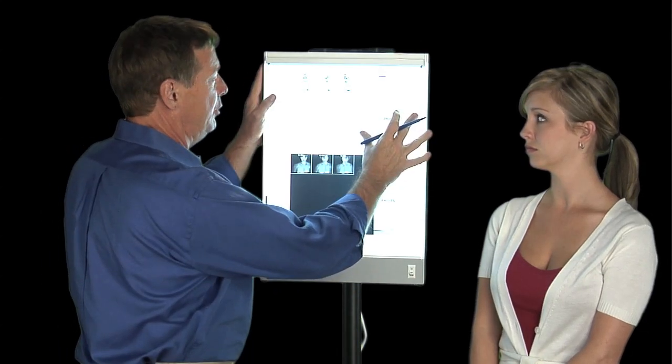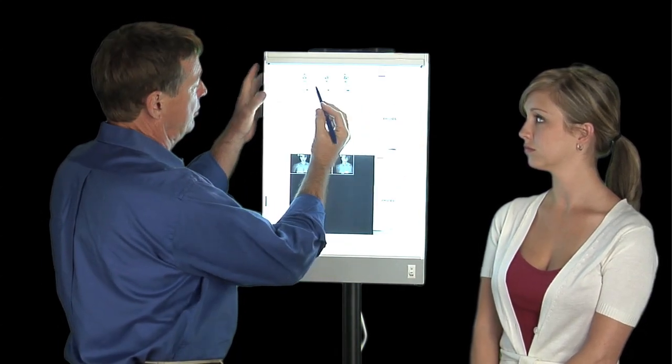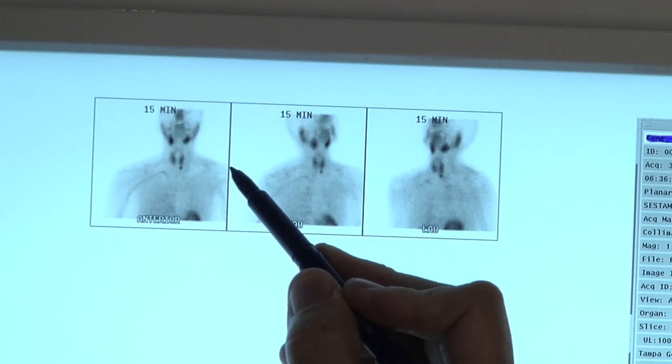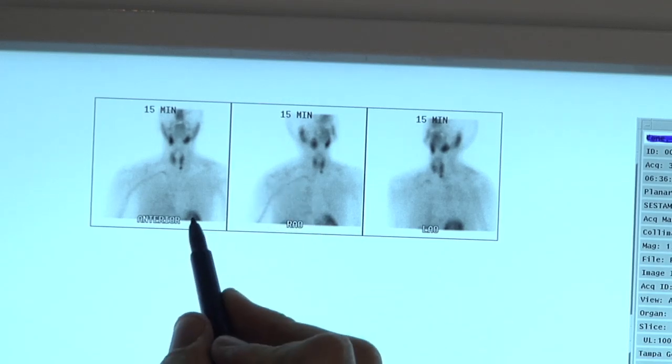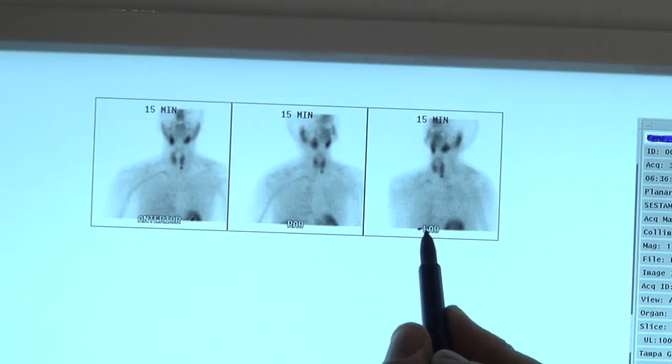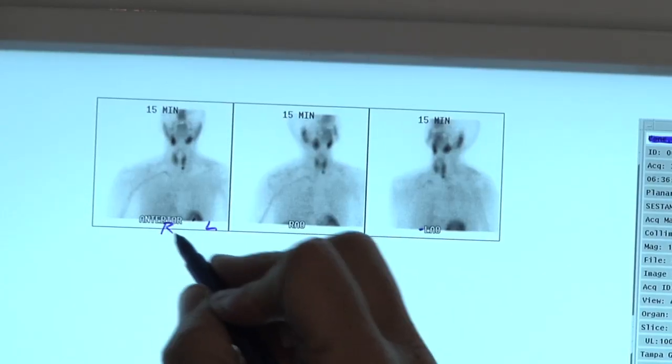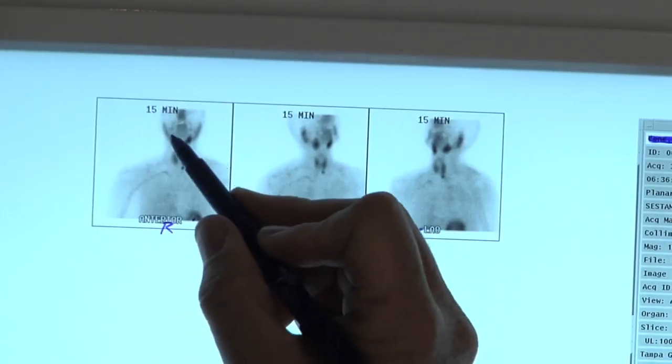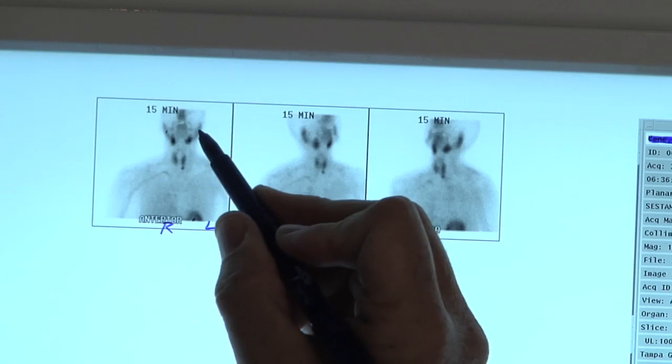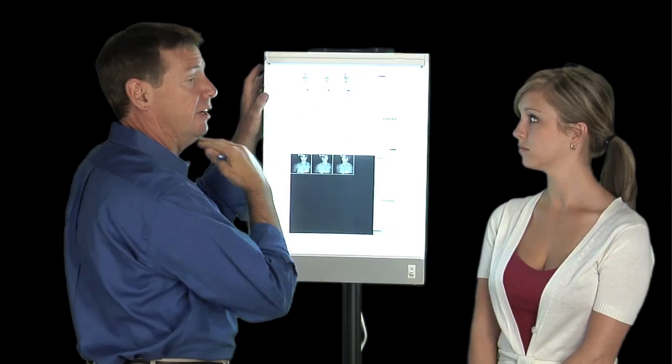This is a Sestamibi scan. We use these scans to find parathyroid tumors. This is the shoulder and head of a patient. This is the heart. A little bit of the liver is over here. X-rays are always backwards, so this is the left side and the right side. These black spots up here are salivary glands. They're on everybody's x-ray underneath the jaw.